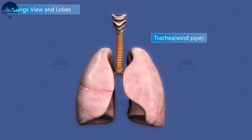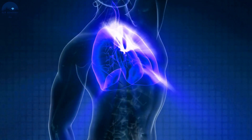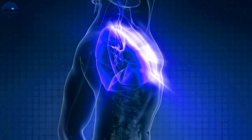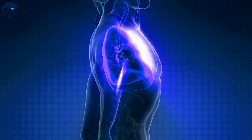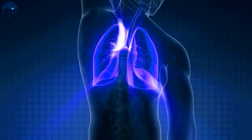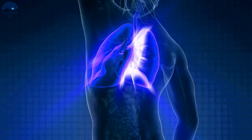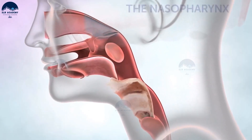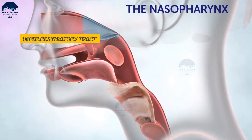The respiratory tract is divided into two sections: the upper respiratory tract and the lower respiratory tract. These two sections are separated by the vocal cords. The upper respiratory tract includes the nose and nasal cavity, the pharynx, and the larynx.